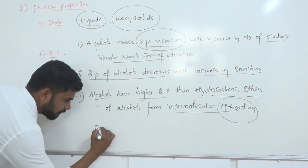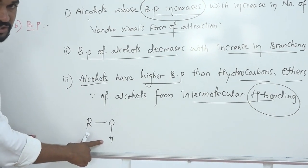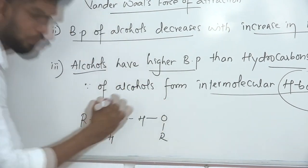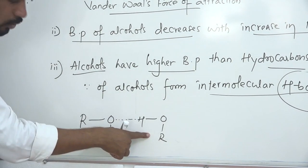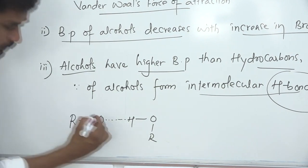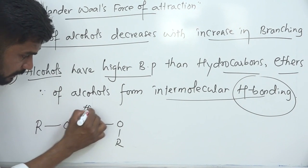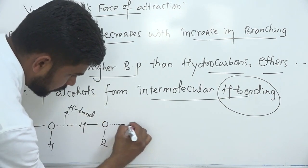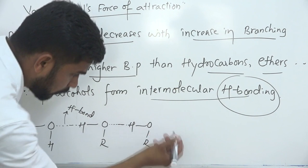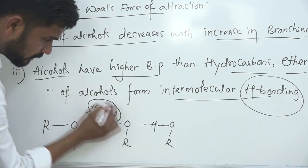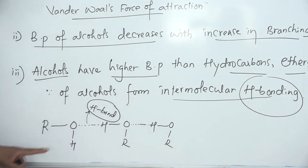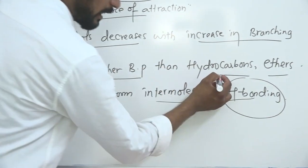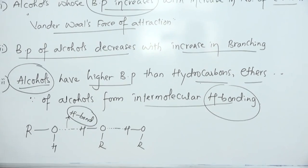The general representation of alcohols is ROH. The oxygen in one alcohol molecule forms intermolecular hydrogen bonding with the hydrogen atom of another alcohol molecule, represented by dotted lines. Similarly, this oxygen can also form hydrogen bonding with yet another alcohol molecule. This formation of intermolecular hydrogen bonding increases molecular mass, giving alcohols higher boiling points compared to hydrocarbons and ethers.